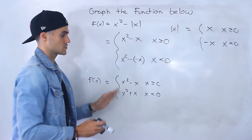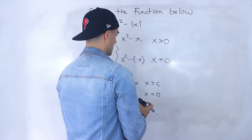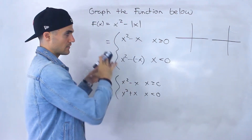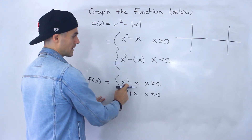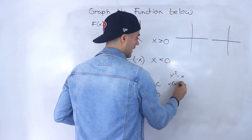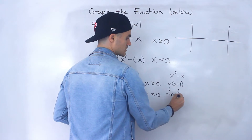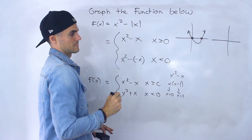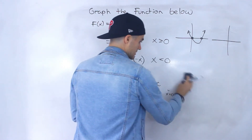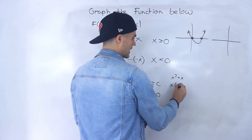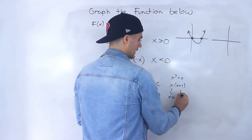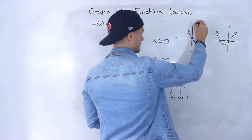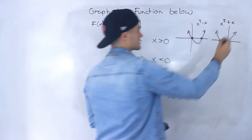Now let's graph this piecewise function. First, I'm going to graph both functions separately so we can see how they look overall, then graph them according to the intervals. For x squared minus x, we can factor out an x to get x times (x minus 1), giving x-intercepts at zero and one. For x squared plus x, we factor out an x to get x times (x plus 1), giving x-intercepts at zero and negative one. So x squared minus x passes through zero and one, and x squared plus x passes through negative one and zero.